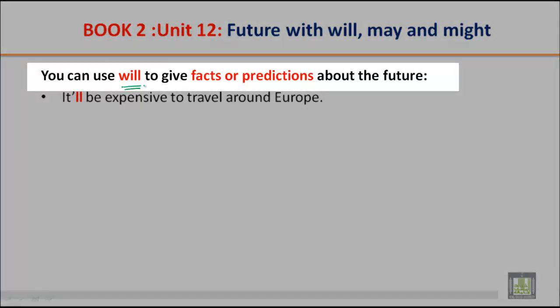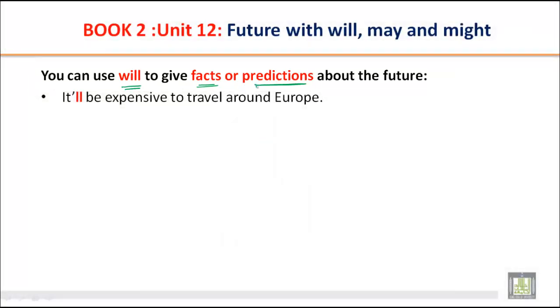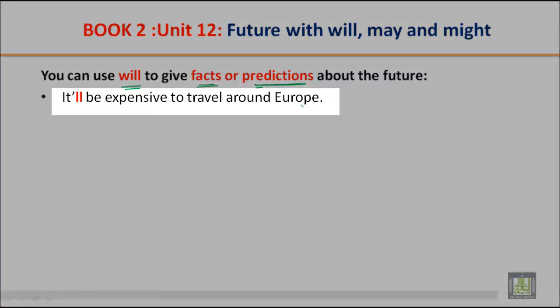You can use will to give facts or predictions about the future. Will is a kind of helping verb — we can use it as a helping verb and as a modal. For example: 'It will be expensive to travel around Europe.' This shows both facts and predictions.